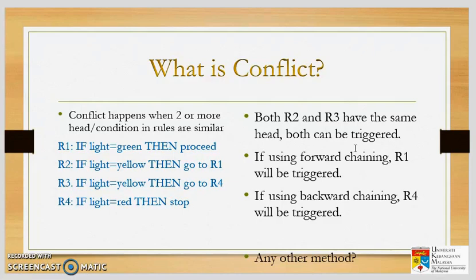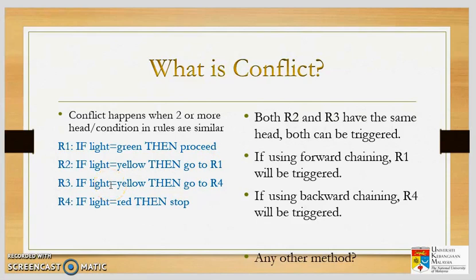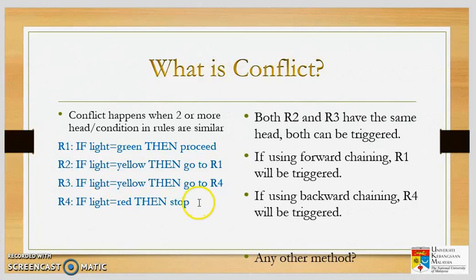Conflict is another thing in uncertainty. It happens when two or more rules are similar but they produce a different output. For example: Rule 1 — if light is green, then cross it. Rule 2 — if light is yellow, then go to R1, meaning wait for the light to turn green then cross. Rule 3 — if light is yellow, then go to R4. Rule 2 and Rule 3 have the same condition — light is yellow — but they have a different process and different conclusion. So which one should we follow?